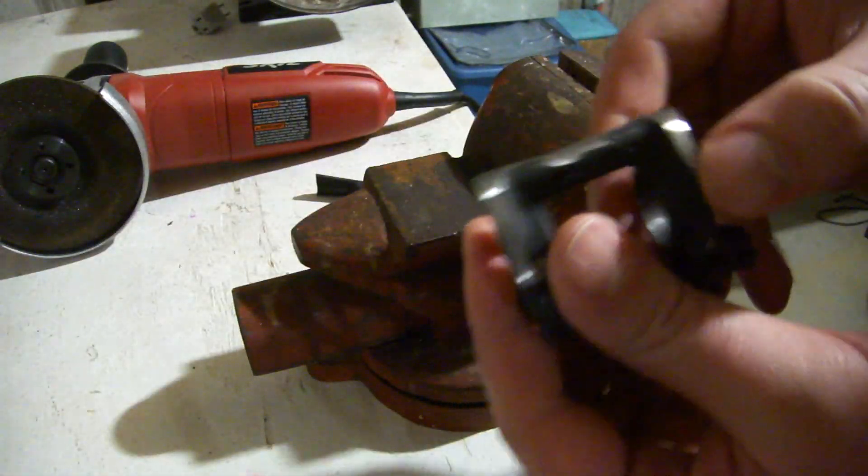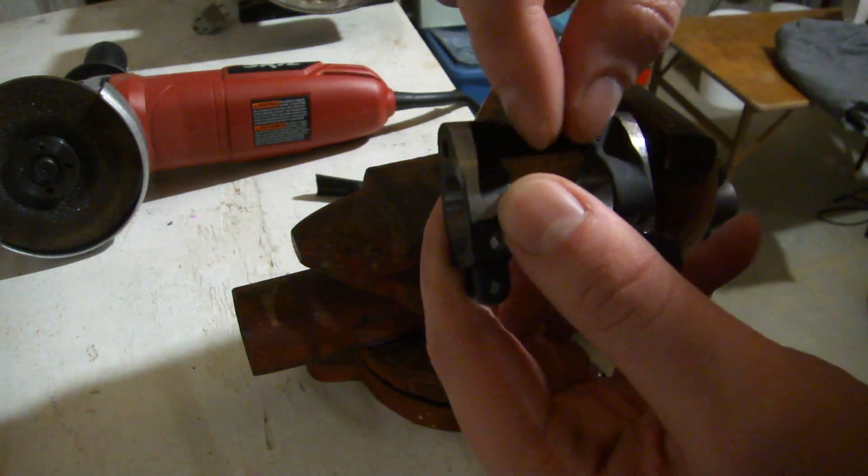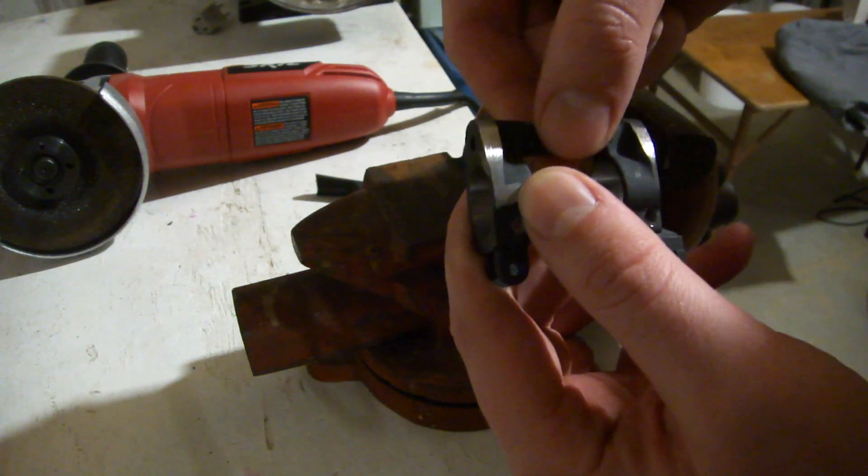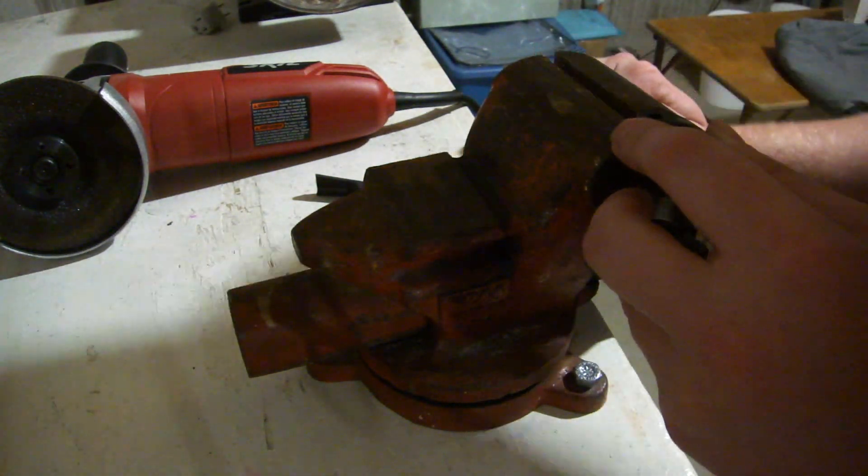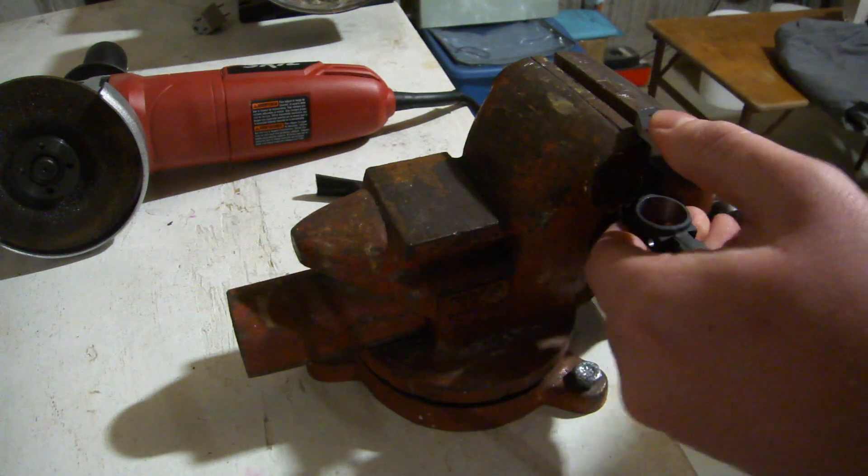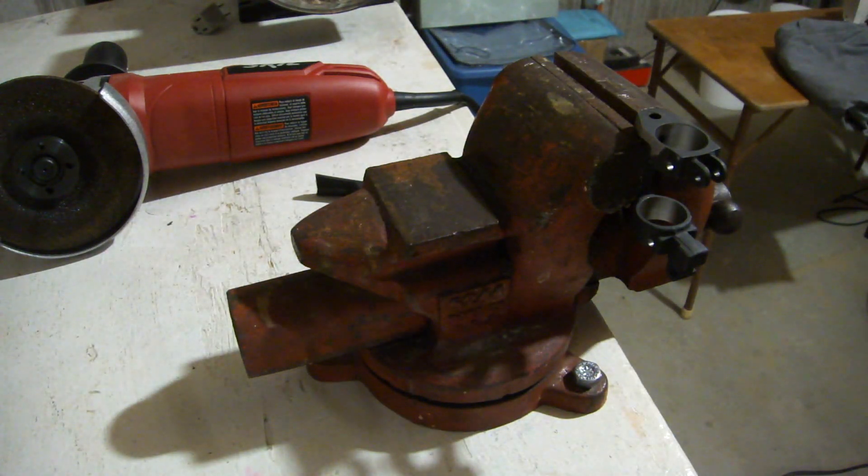Okay, so I don't want to clamp it down on the part that goes over the barrel, so I'm going to clamp it, my jaws of my vise here, right between here, so I'm going to clamp it right on that bridge there so as not to deform anything. I'm just going to take it easy, cut off the sling swivel and the bayonet lug.